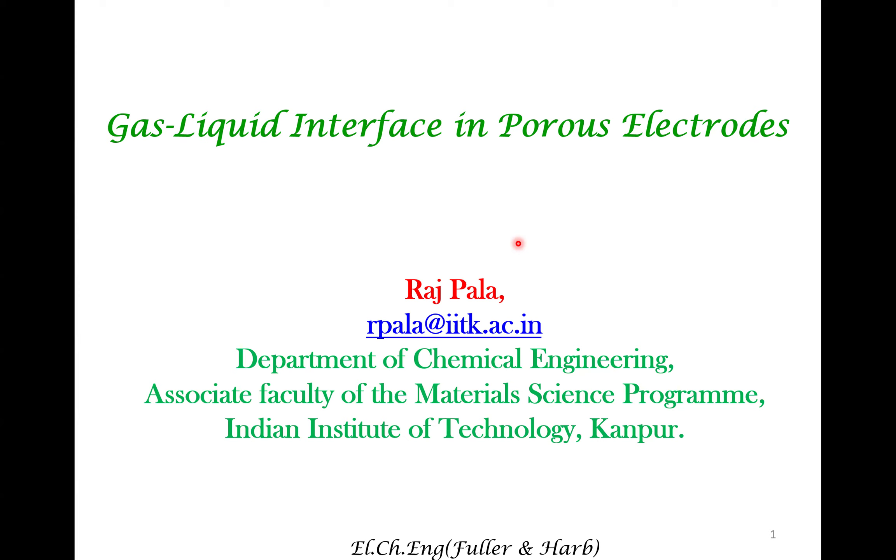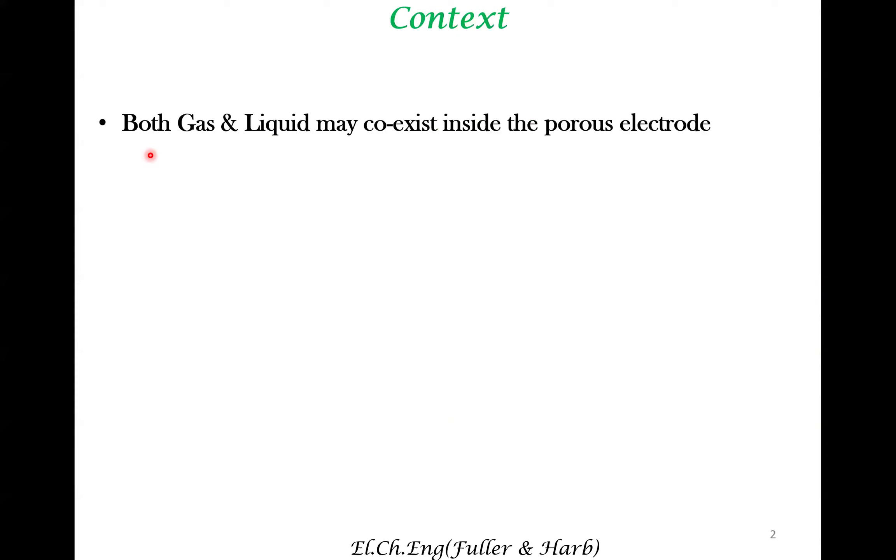This involves the presence of three phases. We were already looking at two phases in a porous electrode: a liquid phase, which is an ionic conductor, and an electronic phase, which contains a solid. Here, we have an additional phase, which is a gas phase. Such systems may coexist inside the porous electrode.